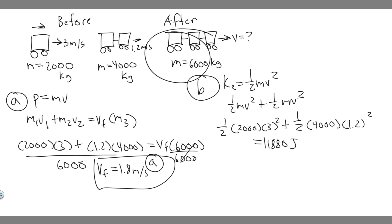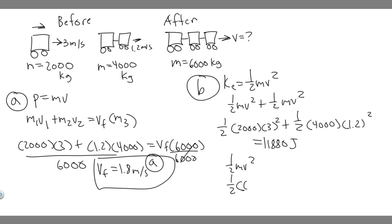Now let's find the final kinetic energy. Since all three cars are combined into one object, it's just one calculation: ½mv². So it's ½ times 6,000 times 1.8², which we just found in the last part. That gives us 0.5×6,000×3.24, which equals 9,720 joules.